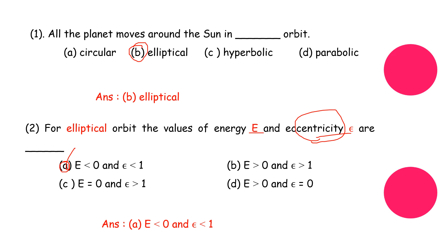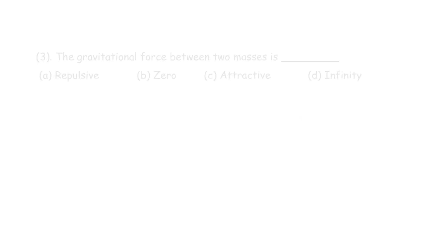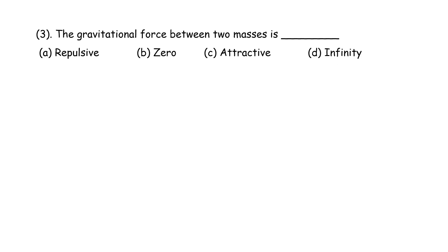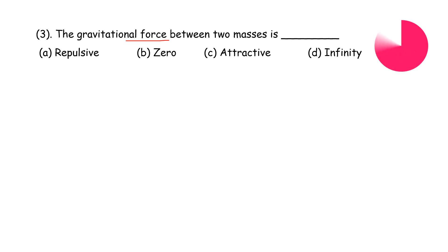The next question: the gravitational force between two masses — what is it? The four options are repulsive, zero, attractive, and infinity. The correct answer is attractive; option C is the correct answer. Gravitational force between two masses is always attractive.